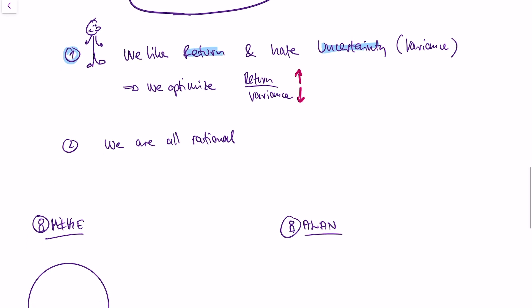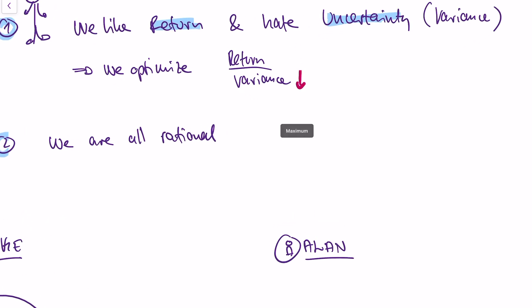The second assumption is that people are smart and rational. In other words, they understand the math, they know what they're doing, and they correctly optimize and solve this problem. So people optimize return divided by variance and they do this correctly — no math mistakes in the market, no dumb people; everybody understands math.